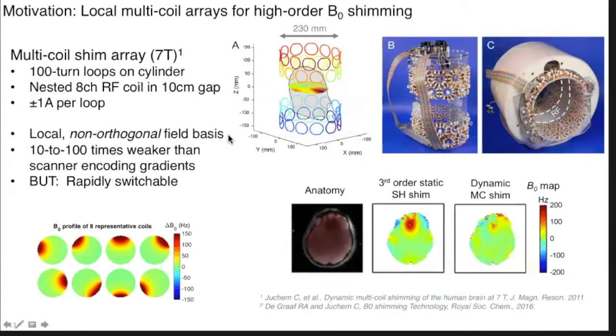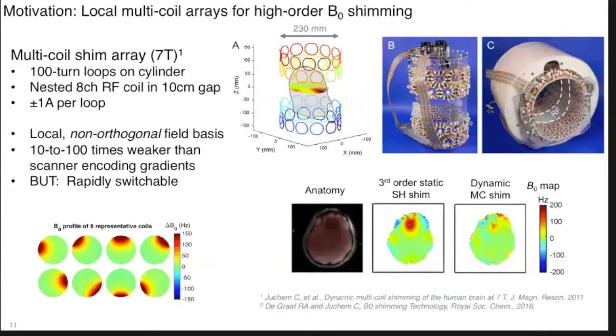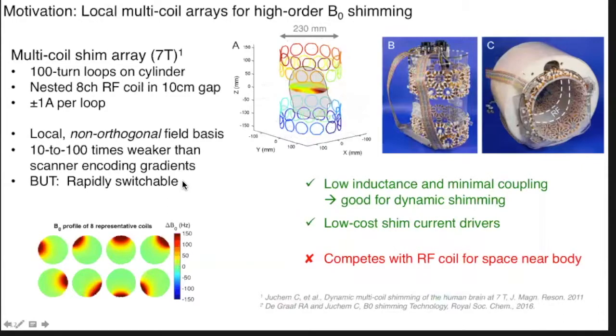So what I point out about this is that it's a non-orthogonal basis. That might seem bad at first, but it gives you a lot of flexibility for tailoring the field around the head. And it's 10 to 100 times weaker than the scanner's encoding gradients. These don't have to be strong fields. They just have to be spatially independent so that you can create high spatial frequency offsets. And very important is that these are little loops, so they're rapidly switchable. They don't have a lot of inductance. They don't create eddy currents. So this is great for what's called dynamic shimming, where you switch the shims very quickly.